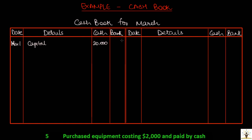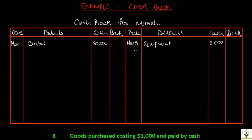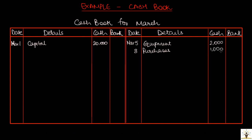Purchased equipment costing $2,000 and paid by cash. Since this is a payment of cash, go to the credit side of the cashbook. The date March 5, details will be equipment and $2,000 in the cash column. Goods purchased costing $1,000 and paid for them by cash. Again, this is a payment entry. Go to the credit side of cashbook, March 8, details will be purchases and $1,000 in the cash column.